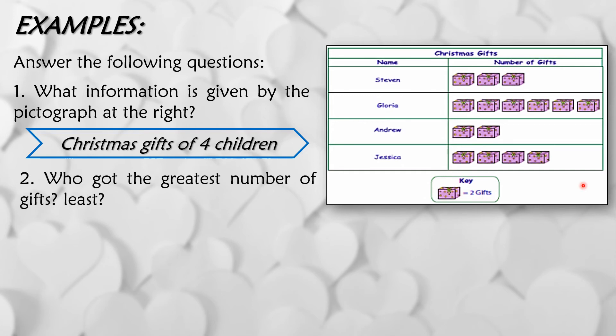Second question, who got the greatest number of gifts? And who got the least? So ang may pinakamaraming nakuhang regalo ay si Gloria, na kung saan nakakuha siya ng 2, 4, 6. So 6 times 2 is 12 gifts. And then ang may pinakakaunti namang nakuhang regalo ay si Andrew. So since meron lamang dalawang picture ng gift, so 2 times 2 is 4.